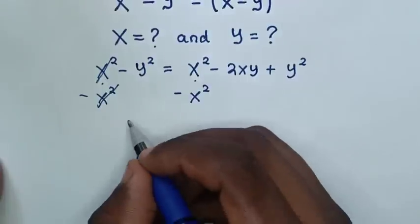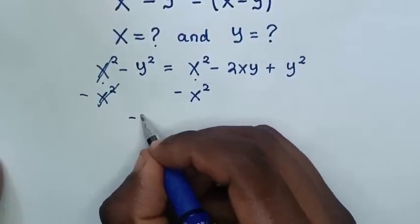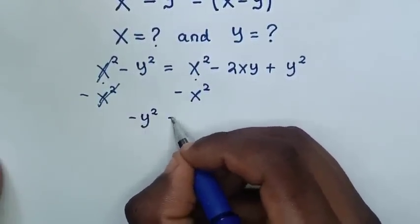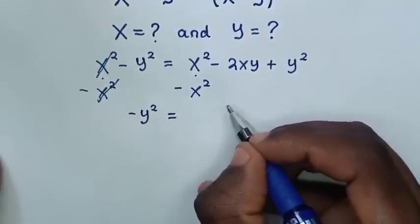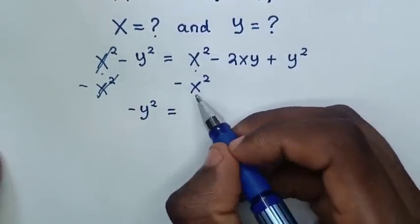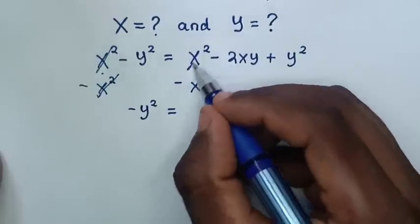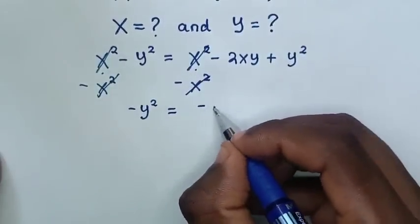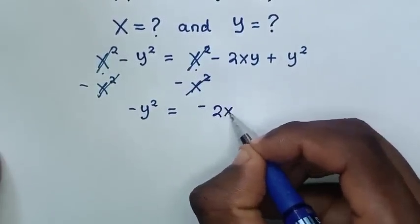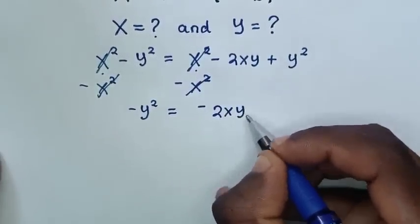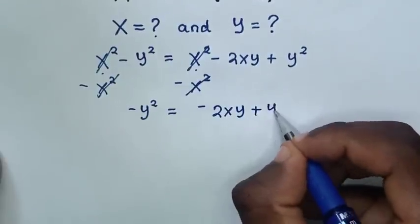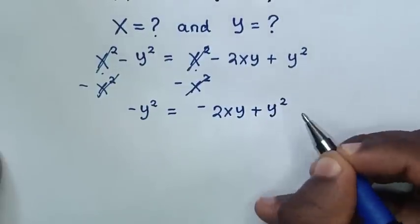So here it will be minus y squared is equal to — also here, x squared minus x squared will cancel each other — so here it will be minus 2xy plus y squared.